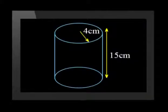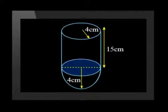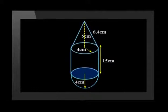Sounds complicated, doesn't it? But it becomes much simpler if we first draw a rough sketch to help us see what the solid looks like. Firstly, we draw the cylinder with height 15 centimeters and a circular base with radius of 4 centimeters. Then we add on the hemisphere — a hemisphere is just half a sphere. Finally, we draw in the cone on the other end with a height of 5 centimeters and a side of 6.4 centimeters. We are now in a position to do the necessary calculations.